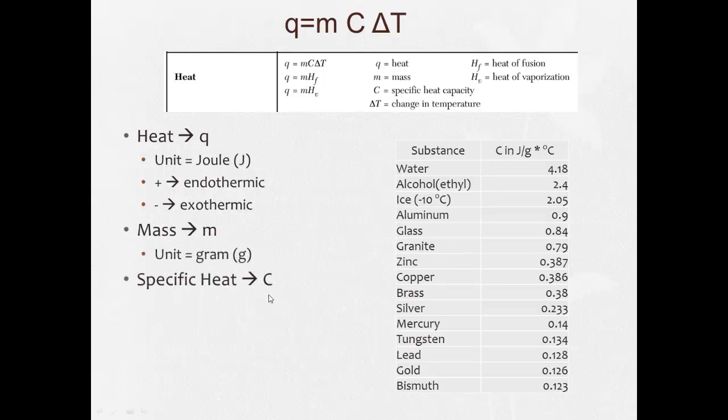Specific heat is C. The unit is joules divided by grams times degrees Celsius. Basically what that does for us, it allows us to cancel out other units to get our Q. And you'll see when we do a bunch of these in class. T is our temperature, and the unit is degrees Celsius or Kelvin. And delta T is our change in temperature.